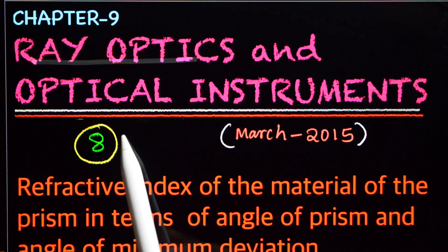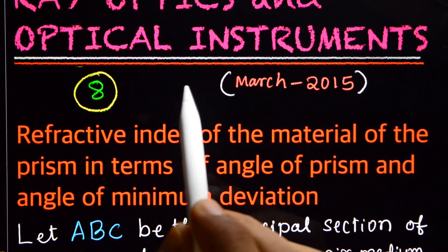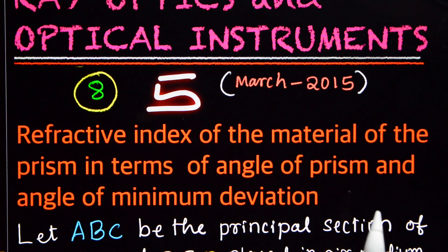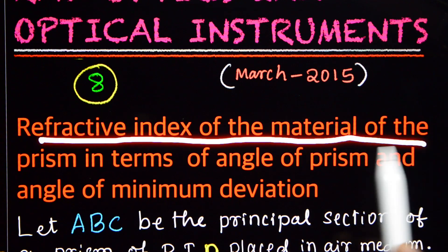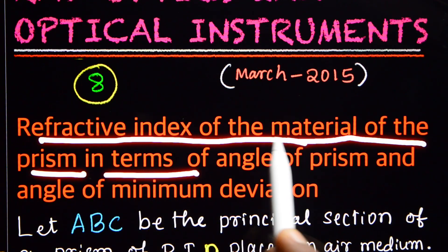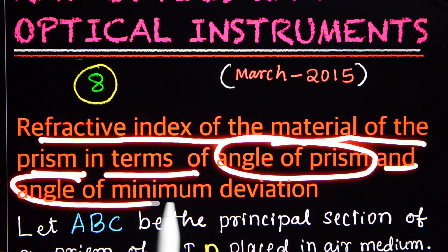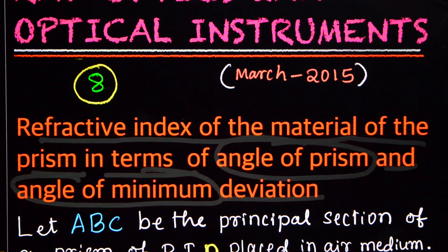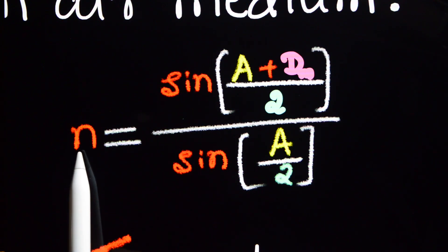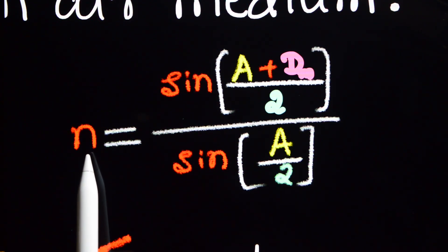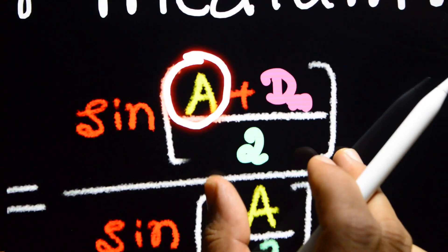This is our topic on ray optics. The question asks us to find the refractive index of the material of the prism in terms of the angle of prism and angle of minimum deviation. We need to prove that n, the refractive index of the prism, is expressed in terms of the angle of the prism A and the angle of minimum deviation.